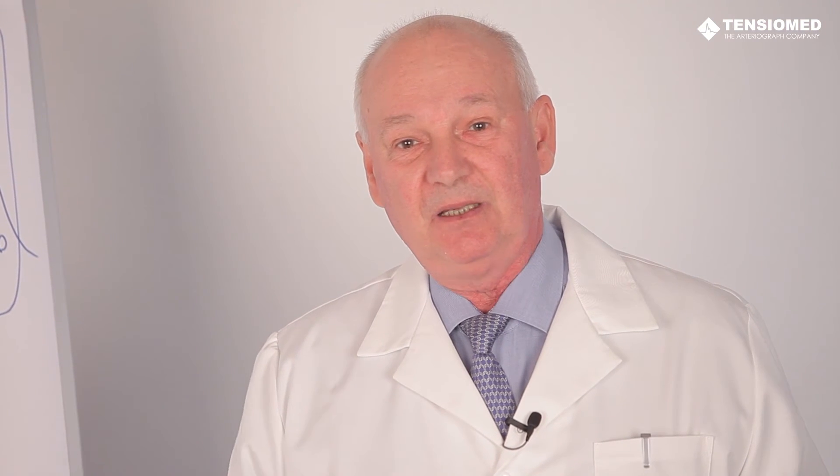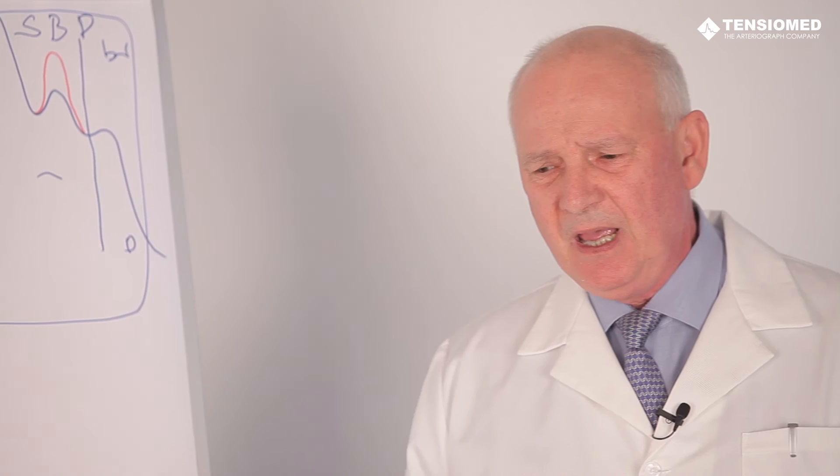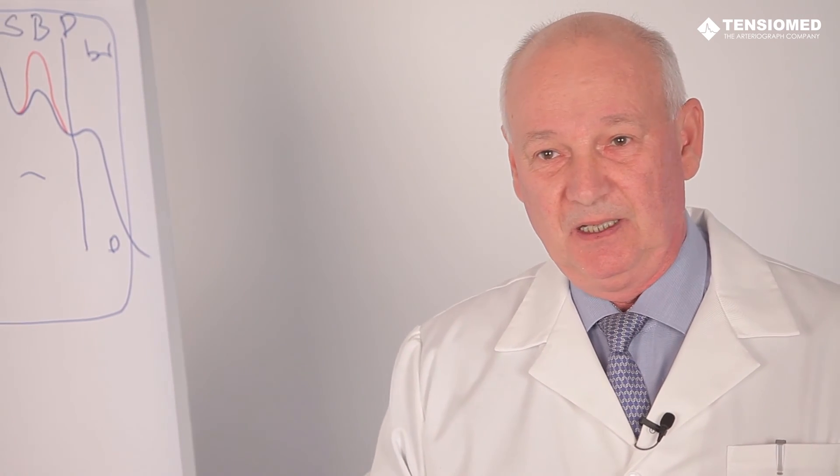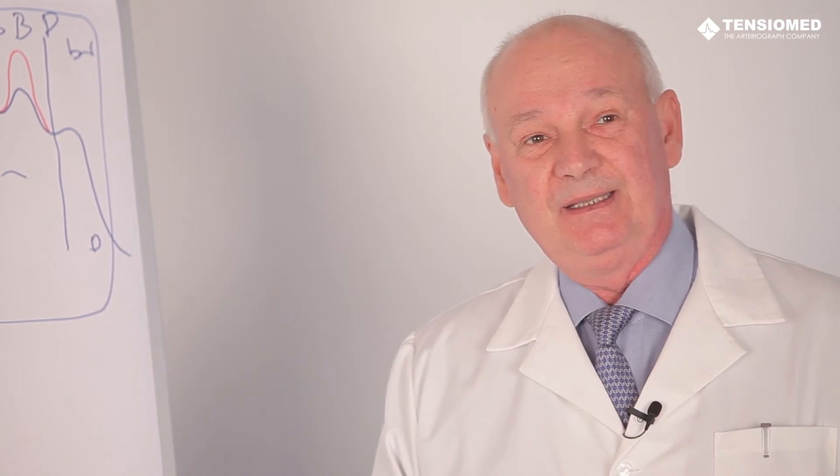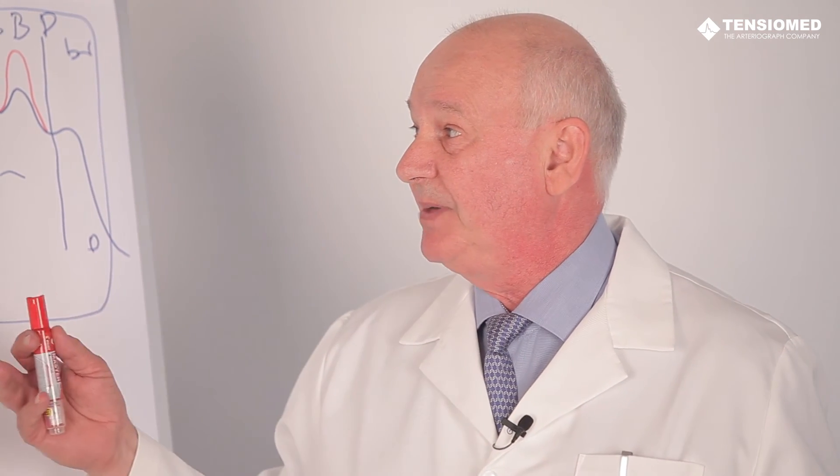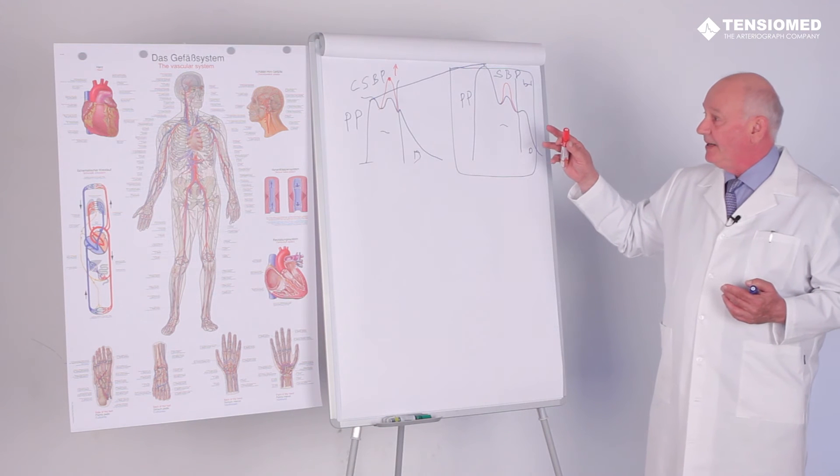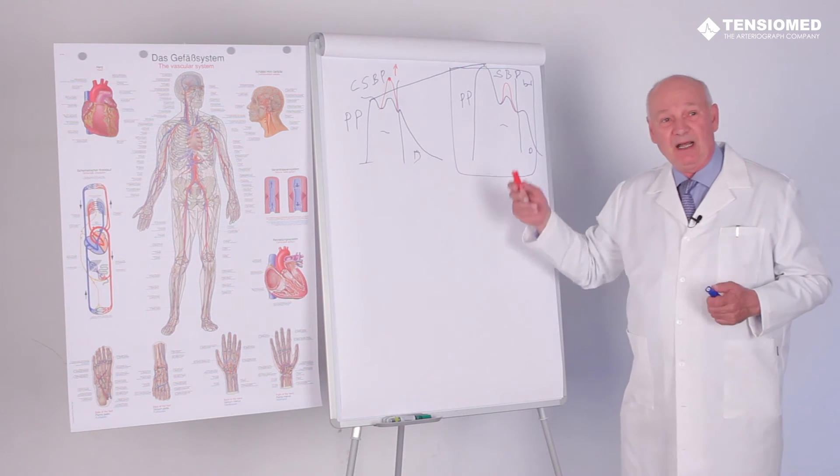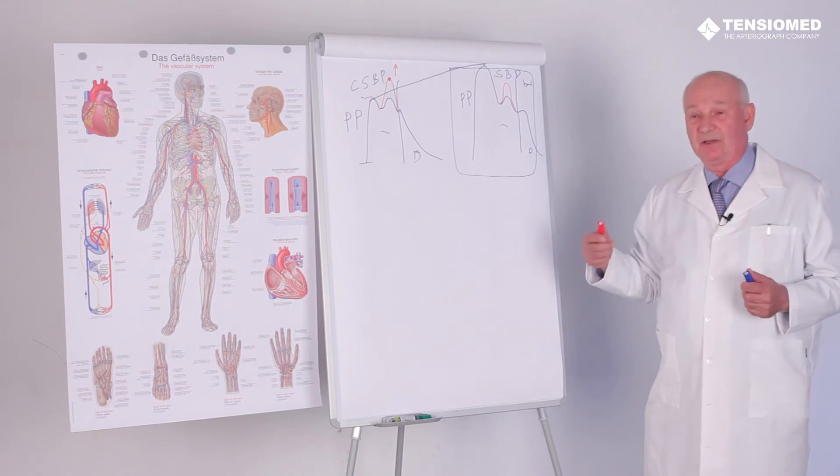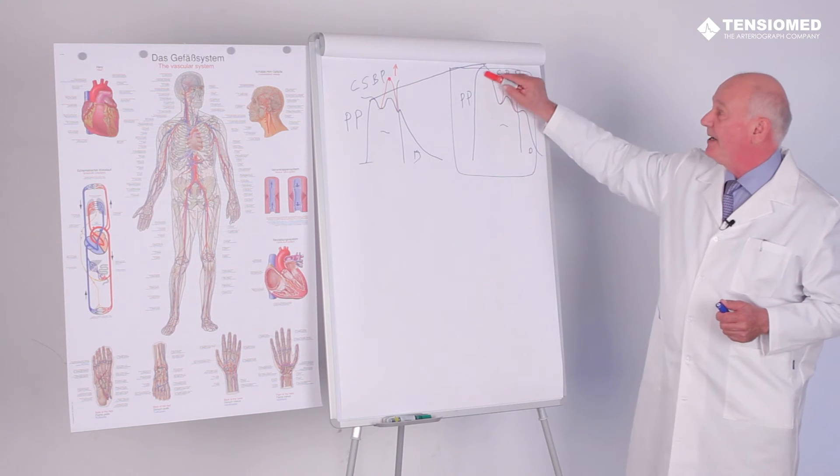In the Strong Heart Study issued by Mary Roman, we learned that aortic central blood pressure and pulse pressure is much more closely related to adverse cardiac outcomes and cardiovascular morbidity and mortality compared to brachial blood pressure.